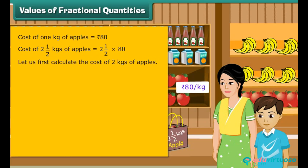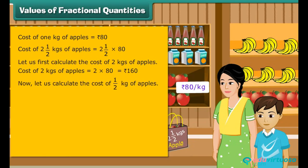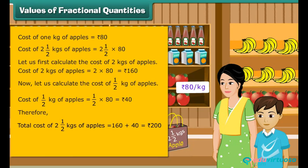Let us first calculate the cost of two kg's of apples. Cost of two kg's of apples is equal to two multiplied by eighty, which is equal to rupees one hundred and sixty. Now let us calculate the cost of half kg of apples. Cost of half kg of apples is equal to one by two multiplied by eighty, which is equal to rupees forty. Therefore, total cost of two and half kg's of apples is equal to one hundred and sixty plus forty, which is equal to rupees two hundred.